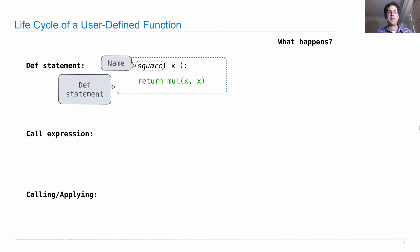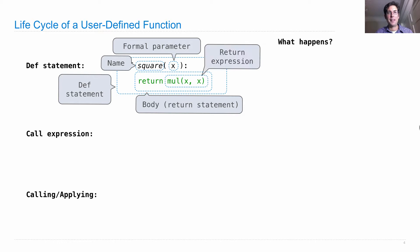This is the whole def statement. It has a name for the function. It has formal parameters. There could be more than one, separated by commas. The body is everything that's indented below the first line. And in this case, the only thing in the body is a return statement. And a return expression follows the keyword return. And that gives the expression that gets evaluated not when the def statement is executed in the first place, but that return expression gets evaluated when the function eventually gets called.